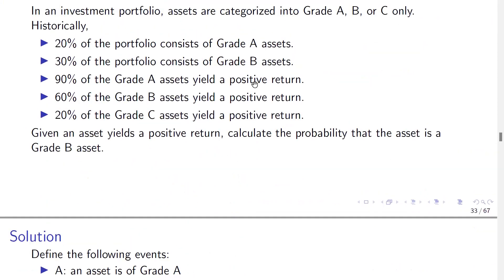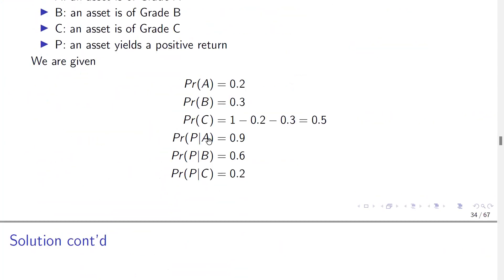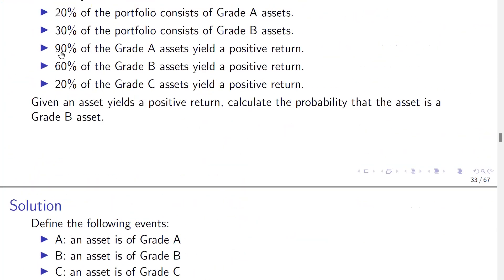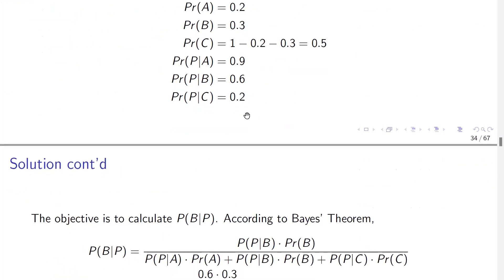The question also states that 90% of grade A assets yield a positive return, meaning P(P|A) = 0.9. And 60% of grade B assets yield a positive return, so P(P|B) = 0.6. And P(P|C) = 0.2. These conditional probabilities are all provided in the question.